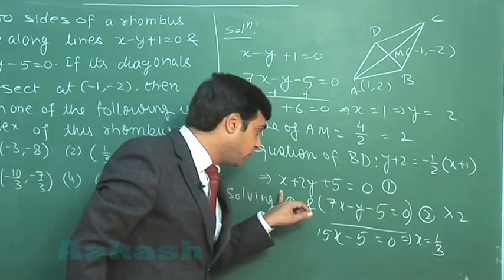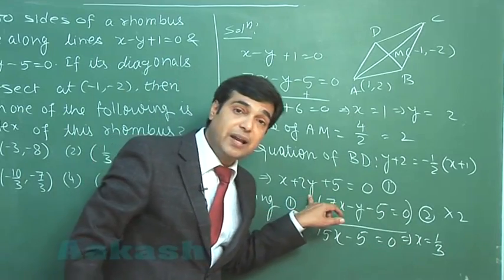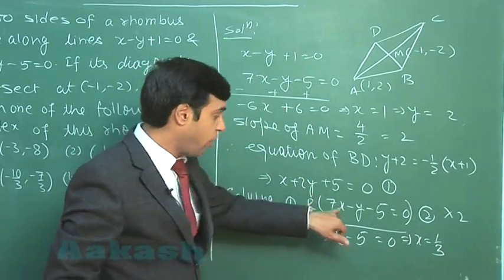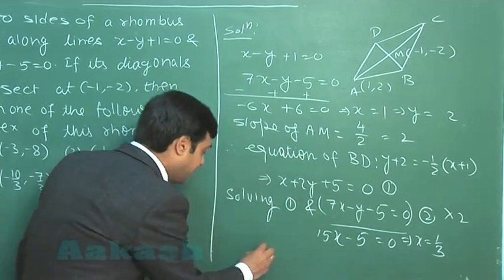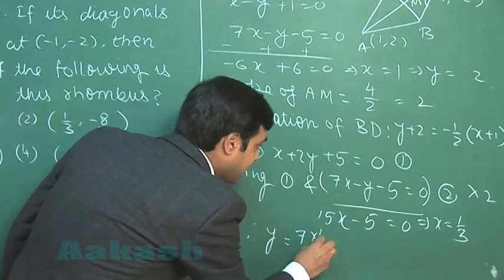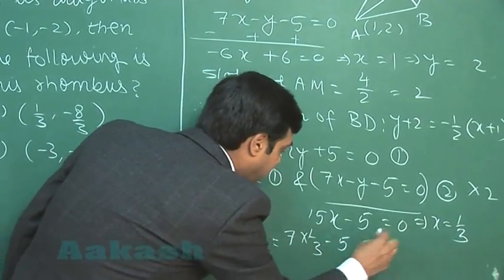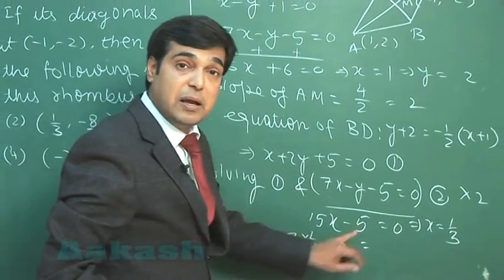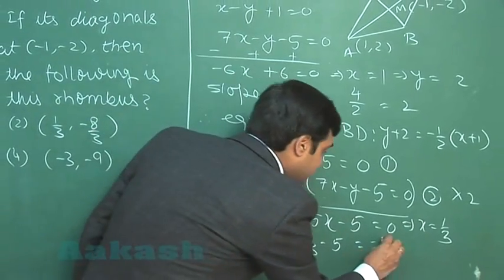Put this value here, 1 by 3, to get the value for y. From here, y from here or from this equation we can get y as 7x minus 5, that is 7 by 3 minus 15 by 3, or simply minus 8 by 3.